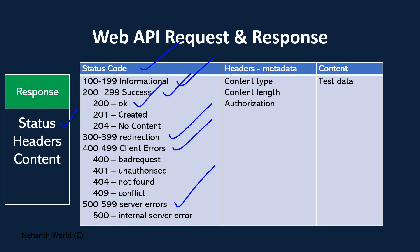200 is a general success status. If there is a POST create request, you need to respond back with 201 — 201 indicates a record was created. 204 means the request succeeded but there is no content being given back to the client. 300–399 is used for redirectional status codes.